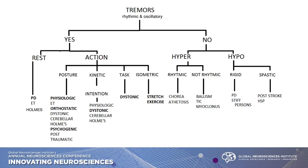Tremors are rhythmic and oscillatory — so is there a tremor? We'll be focusing mostly on the yes side, but if it's not rhythmic or oscillatory, if it's ballistic, if it's a large movement, if it doesn't have a sinuous relationship with the appendage, then we're thinking it is not a tremor. Hyperkinetic movements could be chorea or athetosis. Non-rhythmic could be ballism or myoclonus. If it's not hyperkinetic but a hypokinetic movement, then you're thinking of rigidity and spasticity.